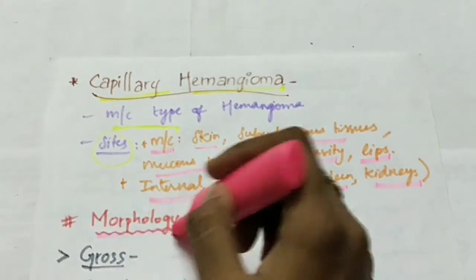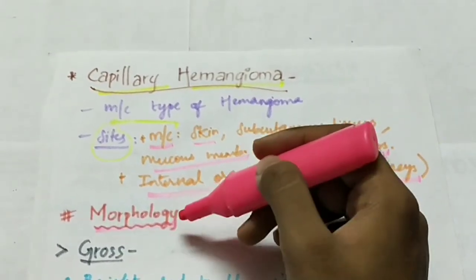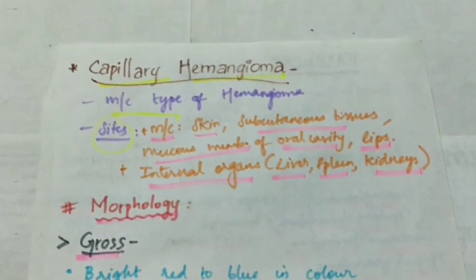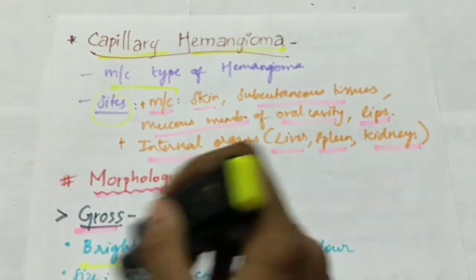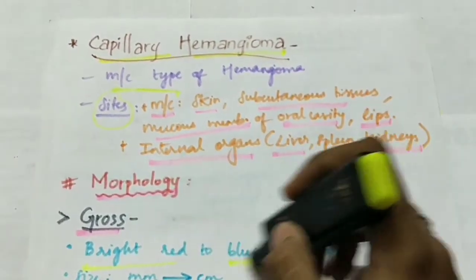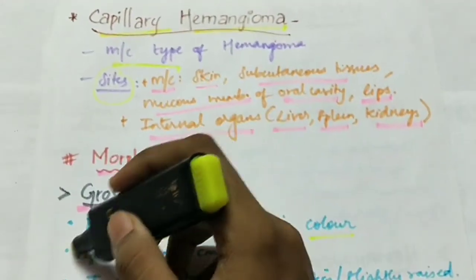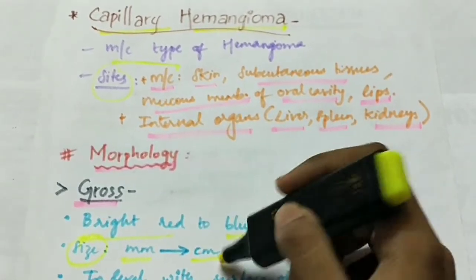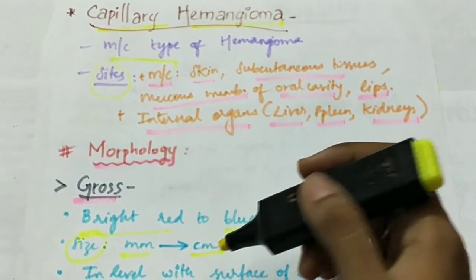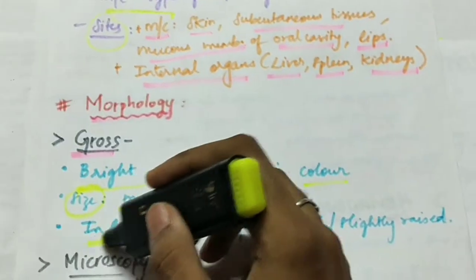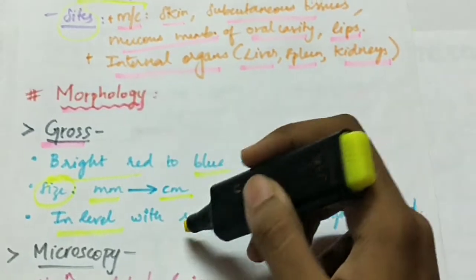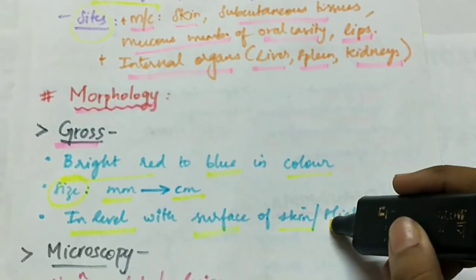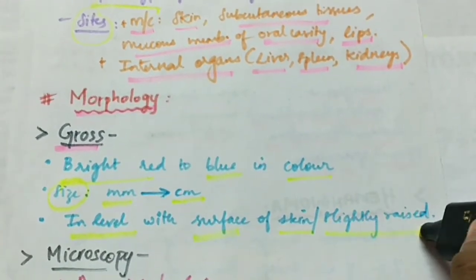Coming to the morphology of capillary hemangioma: grossly it appears bright red to blue in color, and its size varies from millimeters to centimeters. The lesion occurs at the level of the skin surface or it can be slightly raised.